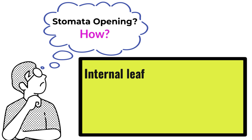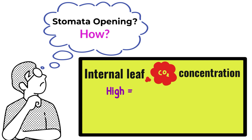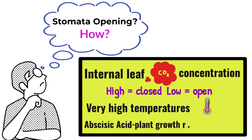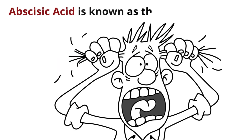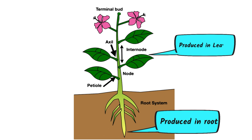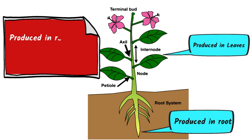One factor is the internal concentration of CO2 inside the leaf. When there is high CO2 inside the leaf — mostly at night — the stomata are closed, and when it's low they open. Another factor is very high temperatures, which cause the stomata to close. This is all down to abscisic acid, a plant growth regulator — a chemical produced by plants. Abscisic acid is known as the plant stress hormone, produced in the roots and leaves. It's produced in times of drought to ensure the stomata are closed and water loss is minimised.